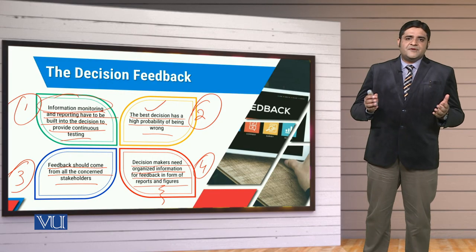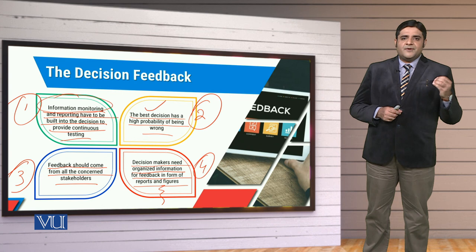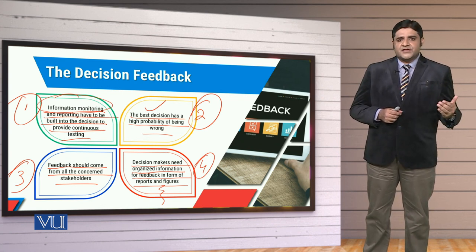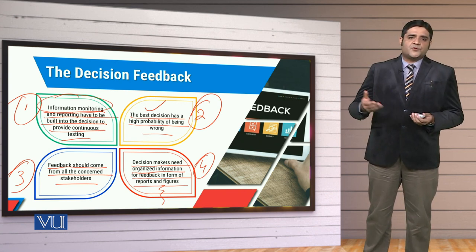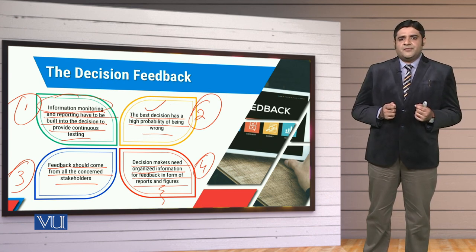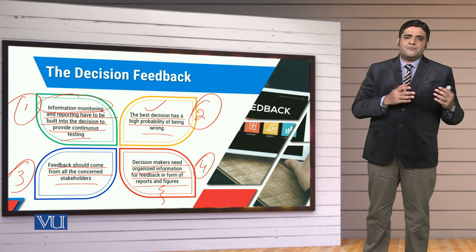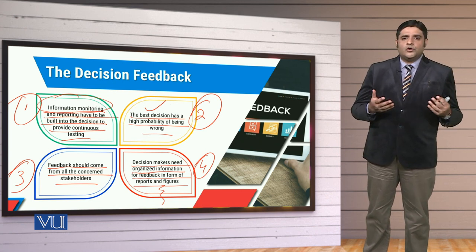Through decision feedback, we understand where we were wrong and where we were right, where we need to re-energize things and where we need to re-engineer them. Sometimes businesses also have to go through phases of business process re-engineering. We need to see what changes are needed and where a developmental perspective must be incorporated. To conclude, dear students, the effectiveness of a decision is truly known when the decision is executed — only then can we know what the tangible, physical, and practical outcomes are, and whether those outcomes are favorable for us.